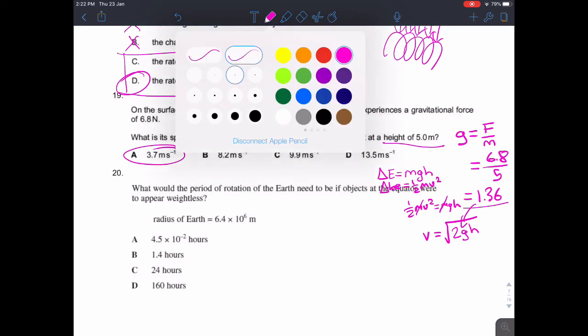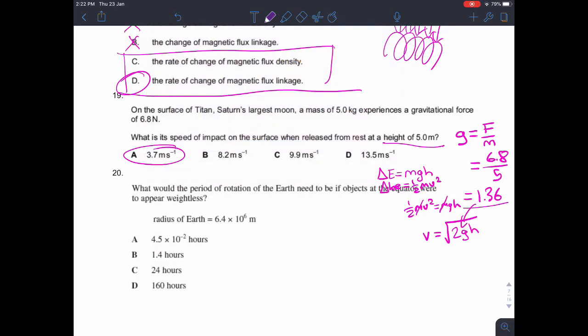Finally, question 20. I'll use a different color to differentiate it from the question above. What would the period of rotation of the Earth need to be if objects at the equator were to appear weightless? Well, for an object at the equator to appear weightless, all of the acceleration due to gravity needs to go into the centripetal acceleration.